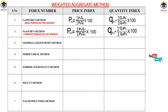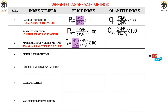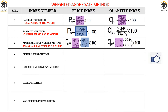Next is the Marshall-Edgeworth method. Here the author has given weight to both the base year and the current year. So this formula is a combination of the Laspeyre's and Paasche's formulas — Laspeyre's has base year weights, Paasche's has current year weights, and Marshall-Edgeworth takes both. So the price index formula is a combination of the Laspeyre's and Paasche's price index formulas. The same applies to the quantity index.